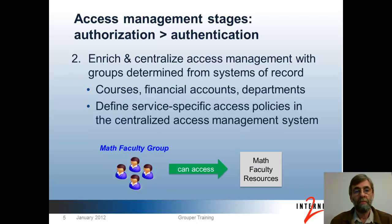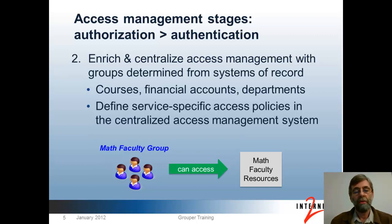The second stage in making authorization more than authentication is to enrich that picture by getting groups of people from systems of record — like who is in a given course, what financial accounts people are paid from, and what the department hierarchies are. When you have that much more information in the access management system, you can begin to define access management policies for each service and pull that service-specific policy definition into a common centralized system.